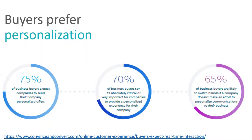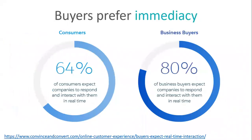Going even one step further: today people don't have a lot of patience. They make a demo request or reply to your email and expect an immediate answer. Automation plays a big part in that, because it's very hard to give immediate replies when doing everything manually. Eighty percent of buyers expect companies to respond and interact with them in real time. This is probably why conversational marketing has taken off — it gives companies a chance to have conversations in real time with leads, at the scale of automation.